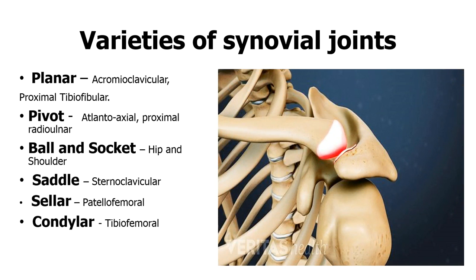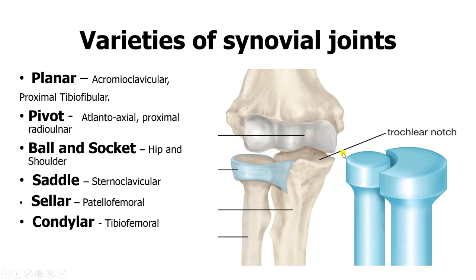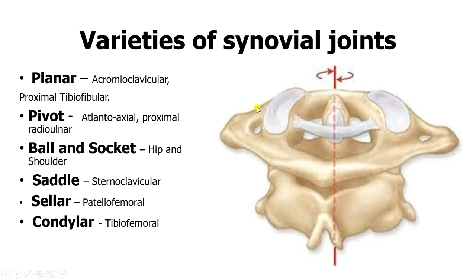The acromioclavicular joint is classified as a planar joint. In a planar joint, you have two flat surfaces of bone. Then the pivot joint — here, the proximal radial — the key feature is the axis of rotation, where significant rotation occurs. The same concept applies to the atlantoaxial joint: this is the dens or odontoid process, part of the C2 vertebra also known as the axis, and this is the C1 vertebra known as the atlas.